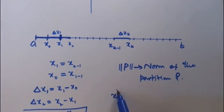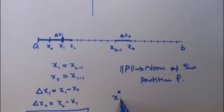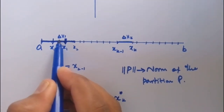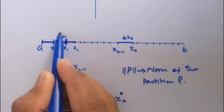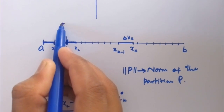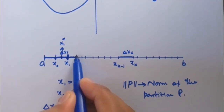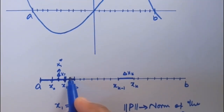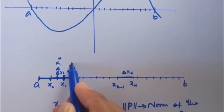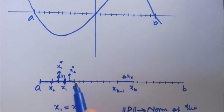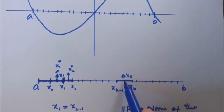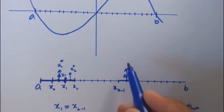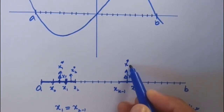Now we have a number of sub-intervals from which we will choose a sample point x*k. This is x*1, and from this interval we will choose x*2, and from the last interval we will choose x*k.